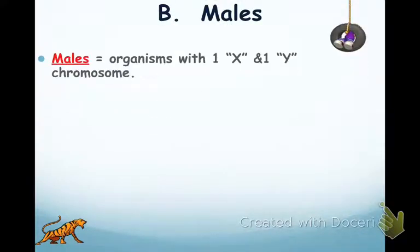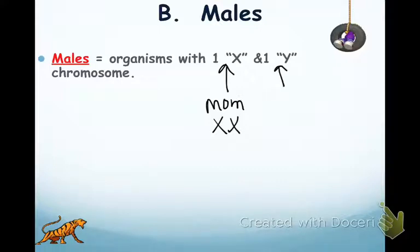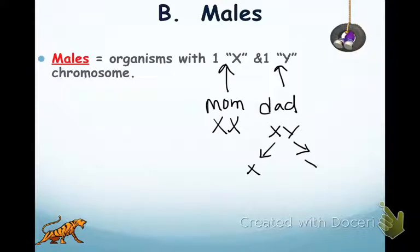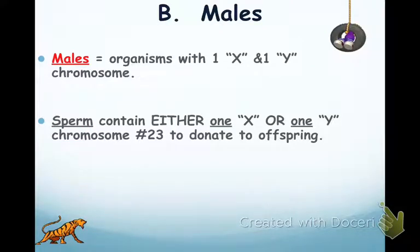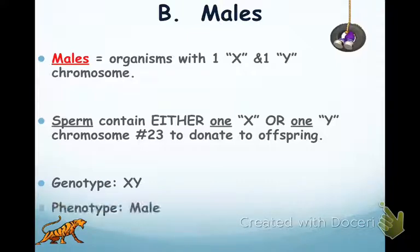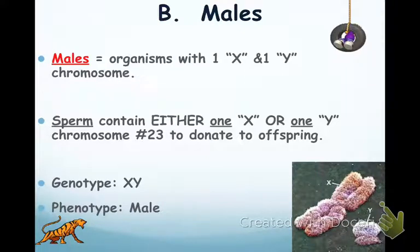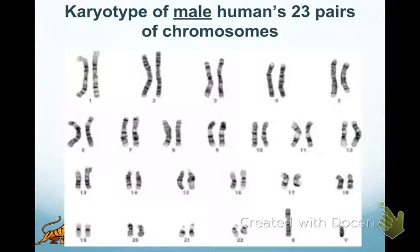What would a male's karyotype look like? A male gets one X and one Y. Where did that male get his X chromosome from? From mom, because mom is XX and she can only give an X chromosome. The Y had to come from dad, because 50% of dad's sperm carry an X chromosome and 50% carry a Y. This is why you have a 50-50 chance of having a boy versus a girl. The genotype for a male is XY. The Y chromosome is really small compared to the X.